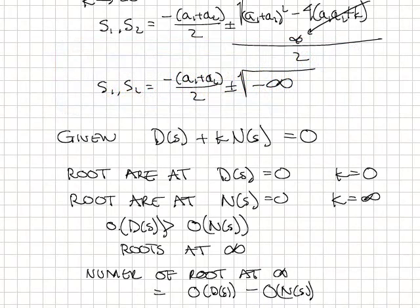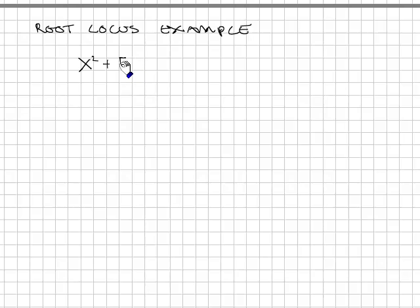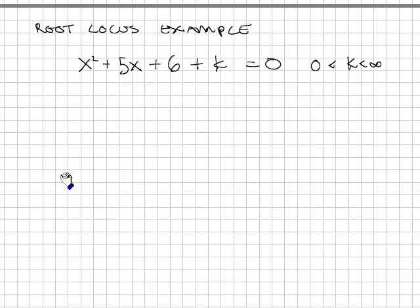We need an example to clarify this. x squared plus 5x plus 6 plus k equals 0. The question is, what are all the possible roots for this equation as k varies from 0 to infinity? I'm going to plot those roots. On the complex plane, I want to plot all possible values. Let's start at k equals 0. At k equals 0, we have the roots of D(s).